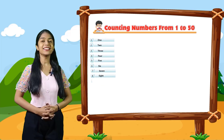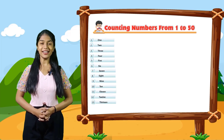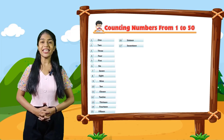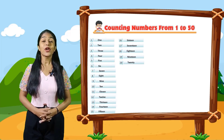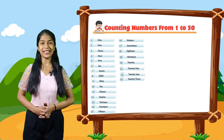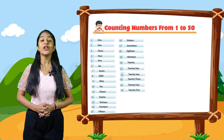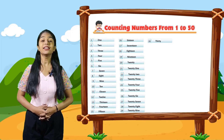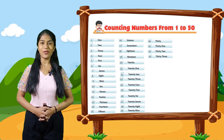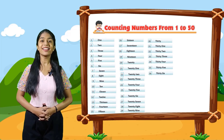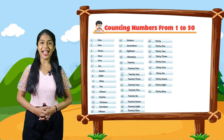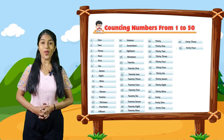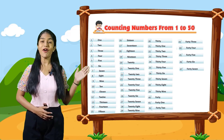9 10 11 12 13 14 15 16 17 18 19 20 21 22 23 24 25 26 27 28 29 30 31 32 33 34 35 36 37 38 39 40 41 42 43 44 45 46 47 48.